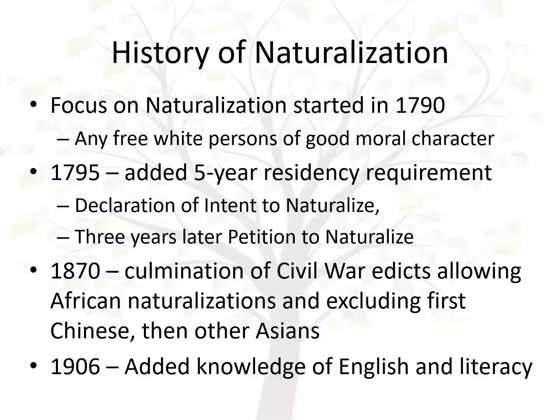In the history of naturalization, we focus on early laws and then the transition over time. These dates are significant as the U.S. defines who can naturalize. As early as 1790, when the first census was taken, citizenship was not a right — it had to be granted, and courts were established to process applications after two consecutive years of U.S. residency. You couldn't legally own property or testify in court if you were not a citizen.